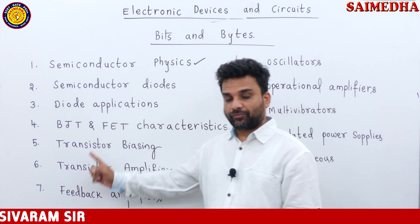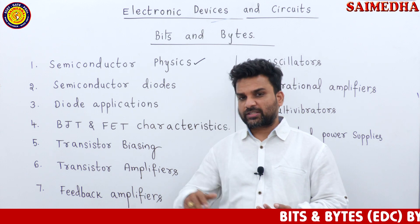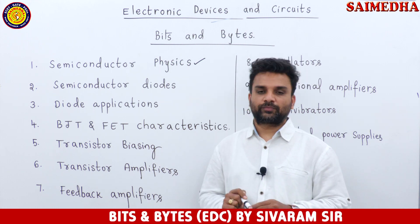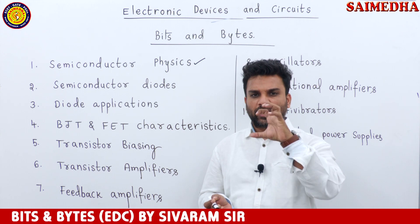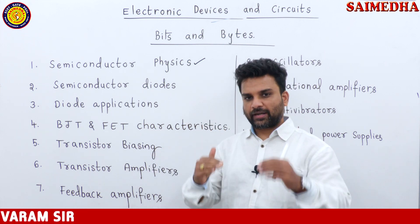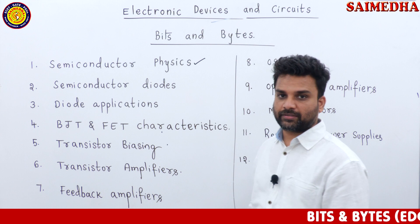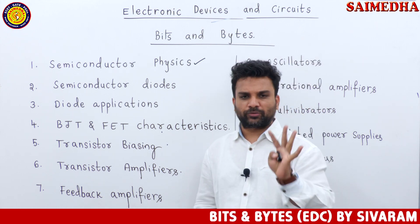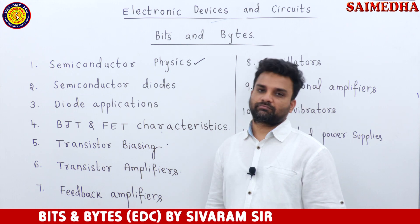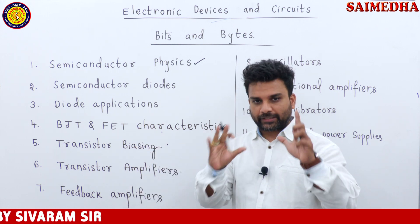Then Unit 5 covers transistor biasing: fixed bias method, collector-to-base bias method, voltage divider bias method, and many other biasing methods. We determine the collector current and the Q-point (beta point). If you analyze the previous papers, BJT biasing, BJT characteristics, and BJT amplifier have many repeated questions. That's why transistors are divided into three separate units to give you full clarity.